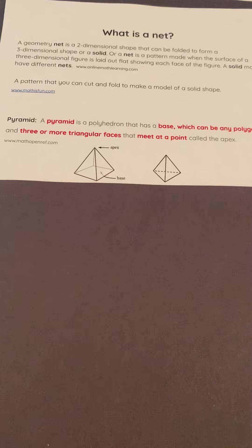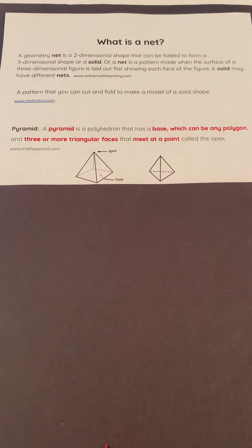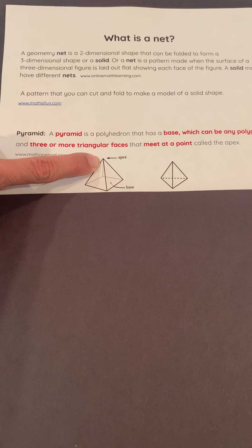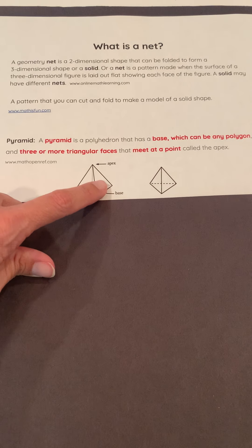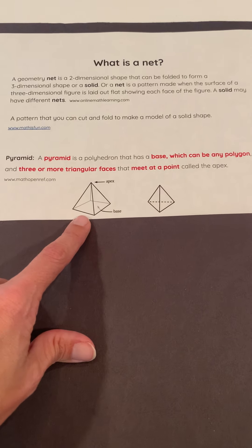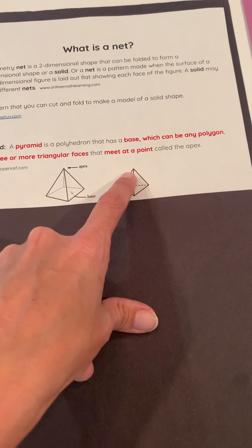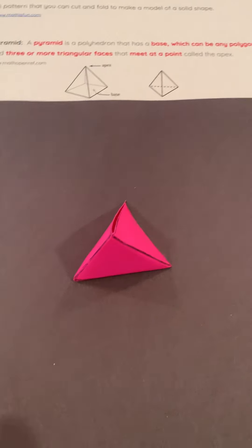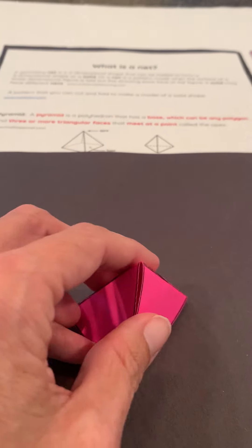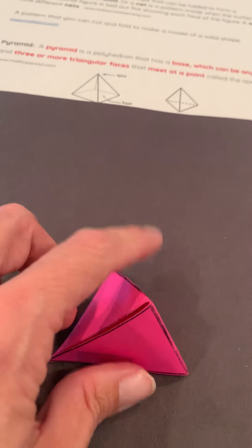First, let's talk about a pyramid. A pyramid is a polyhedron — a three-dimensional shape that has a base, which can be any polygon, and three or more triangular faces that meet at a point called the apex. You can see that pyramids form a point, called the apex, connected with triangular faces. The base can be different things — a square, a triangle, or any other polygon. Pyramids go to a point, an apex.